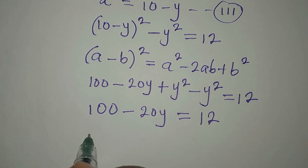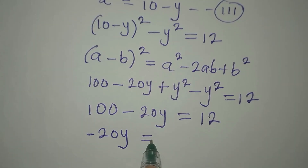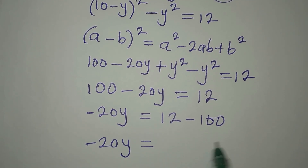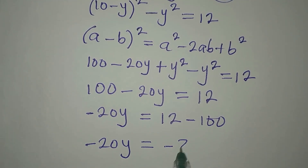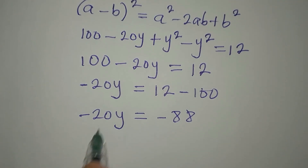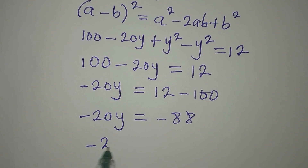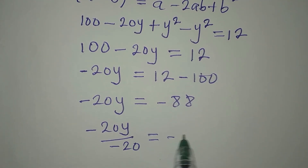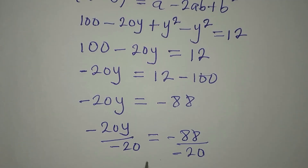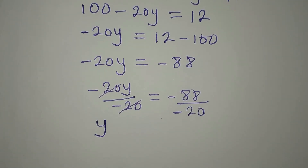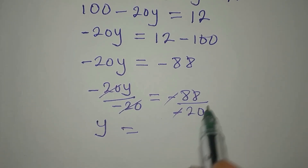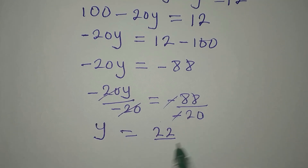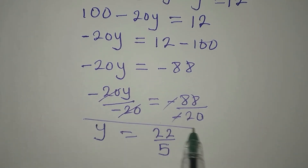Collecting like terms: minus 20y equals 12 minus 100, which is minus 88. Dividing both sides by minus 20: y equals minus 88 divided by minus 20. The negatives cancel, and 4 is a common factor — 4 into 88 is 22 and 4 into 20 is 5. So y equals 22 over 5.